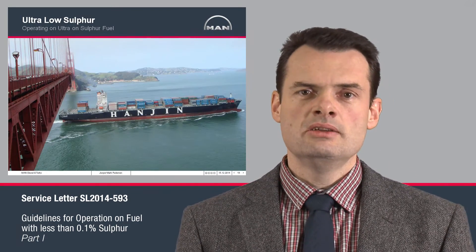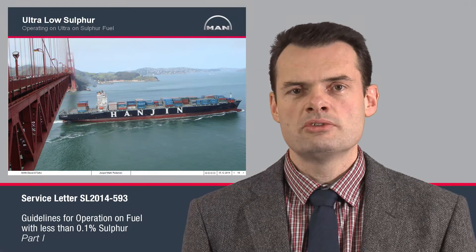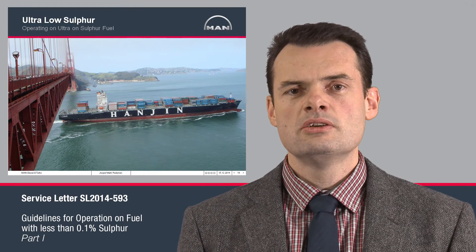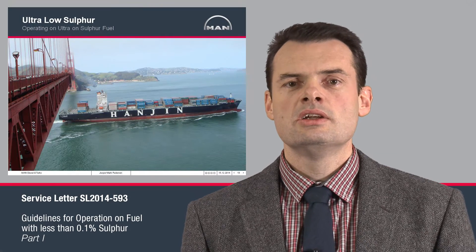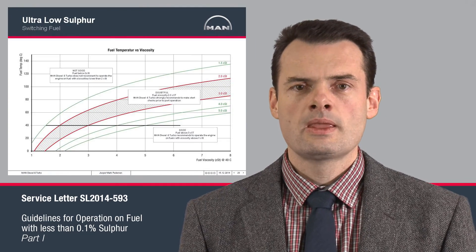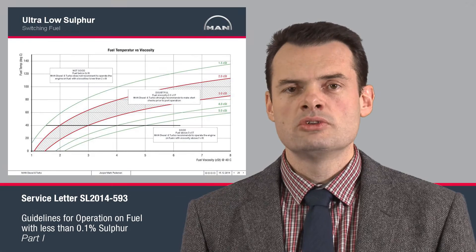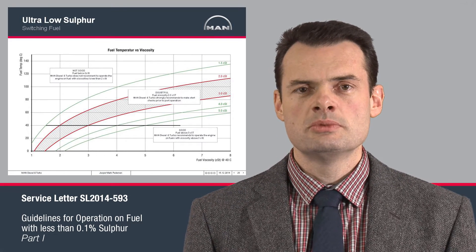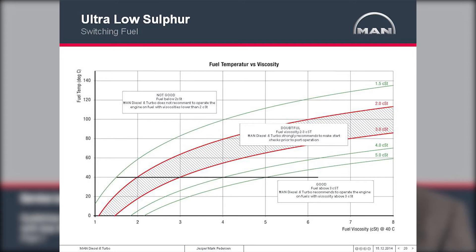We have gained considerable experience from the 2009 switch in California, where the emission rules in the CARP area made it necessary for ships to operate on MGO. The key experience was that it is very important to keep an eye on temperatures in the fuel system itself. As the engine slows down for maneuvers, fuel oil is recirculated and heated by the pumps and the engine, causing viscosity to drop — making it crucial to cool the fuel to avoid seizures inside the fuel pumps.